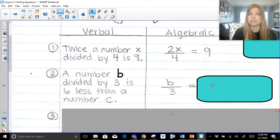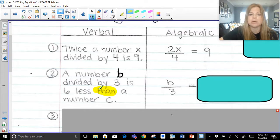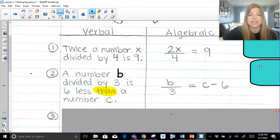6 less than a number c. We should know at this point, if we see this word then, and I have a video about this as well, that then is one of those flipping words. 6 less than a number c actually means c minus 6, because then tells you to reverse.